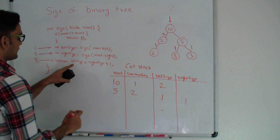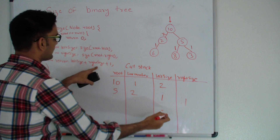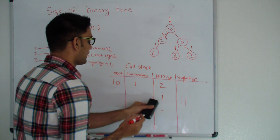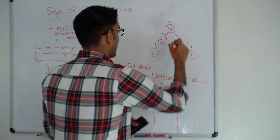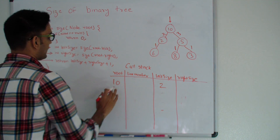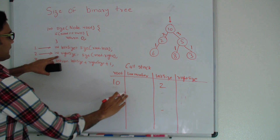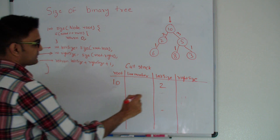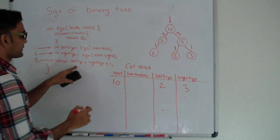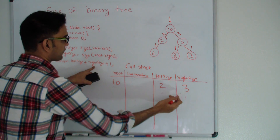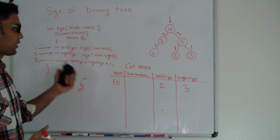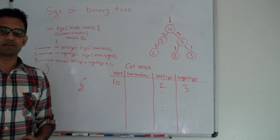So node 5 returns left size 1 + right size 1 + 1 = 3 to its calling function, node 10. Node 10 gets 3 from the right side. Node 10 finally returns left size 2 + right size 3 + 1 = 6 to the calling function, which is the size of the binary tree.